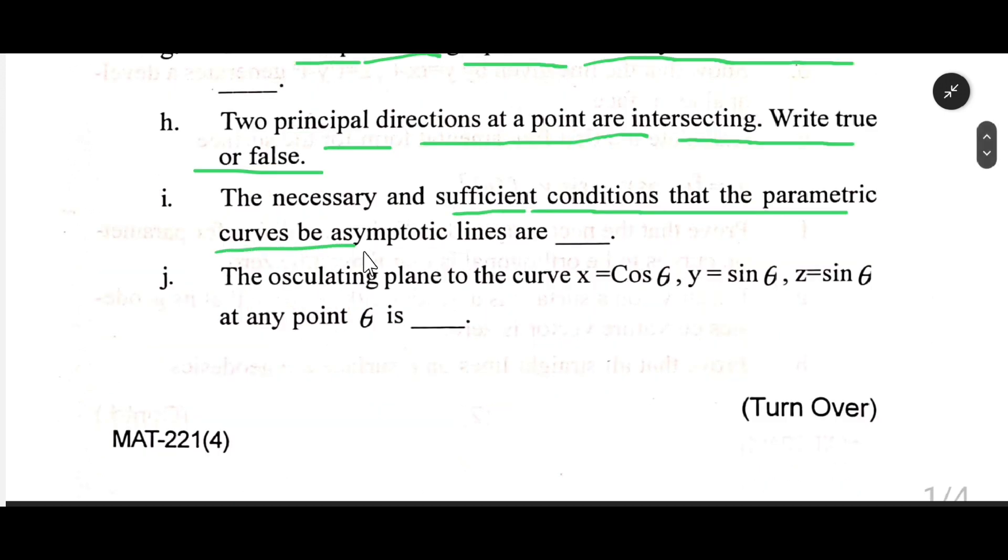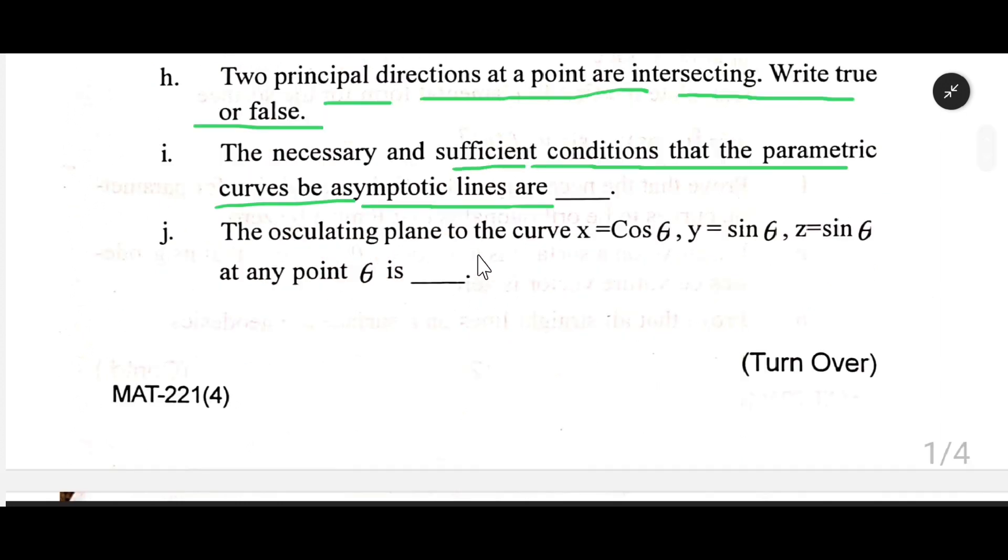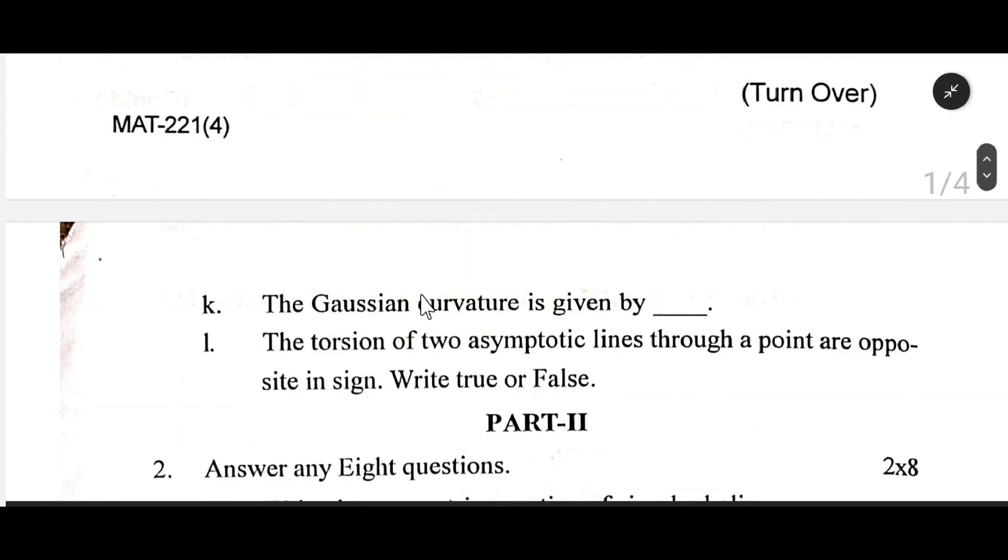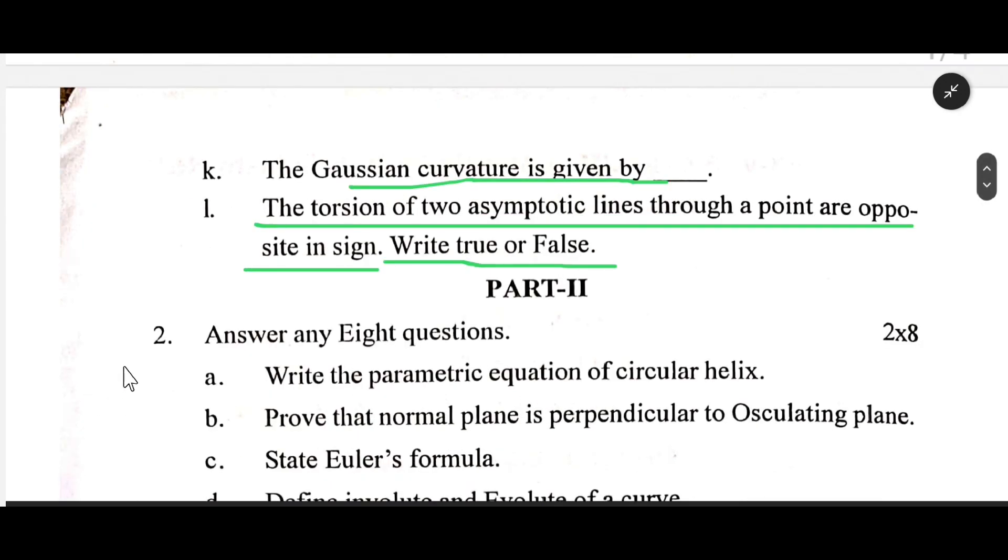Two principal directions at a point are intersecting - true or false. The necessary and sufficient conditions that parametric curves be asymptotic lines are dash. The osculating plane to the curve x = cos θ, y = sin θ, z = sin θ at any point θ is dash. The Gaussian curvature is given by dash. The torsion of two asymptotic lines through a point are opposite in sign - true or false.